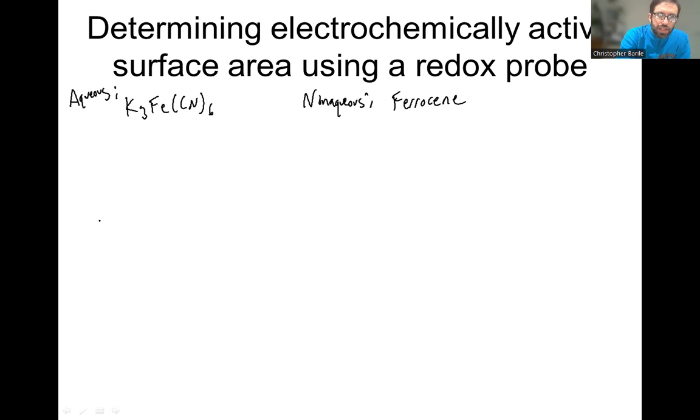The idea is that first you're going to test your redox probe on a flat electrode. So let's say you have a gold surface and then you have another electrode that's a bumpy gold surface.